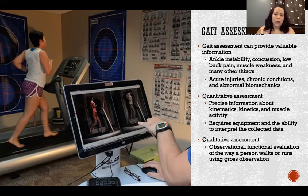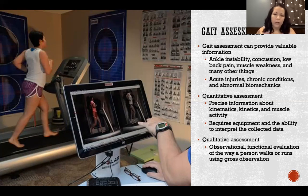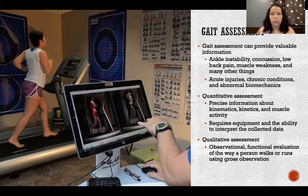Qualitative assessment is an observational, functional evaluation of the way a person walks or runs using gross observation. We can watch somebody walk, run, jump, or skip and analyze subjectively the way they're moving — maybe we see that left and right aren't equal, or they're rounding their shoulders, or they have a limited arm swing. There are many observations we can make subjectively without any equipment or measurements.